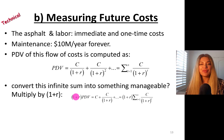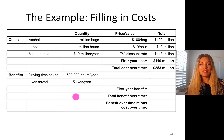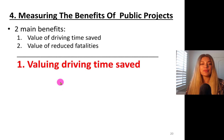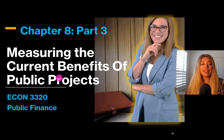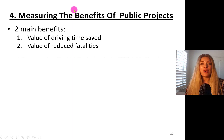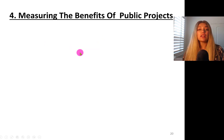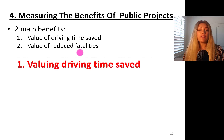So, let's go back to our case. We are now trying to understand how to value driving time saved — 500,000 hours. What is the economic value of this? And also, how do we value human life? Let's get started. This is the start of the benefits of public projects. Two main benefits: value of driving time saved — 500,000 hours — and value of reduced fatalities, meaning fewer life losses.